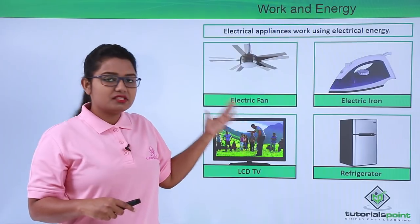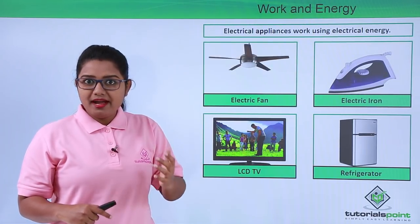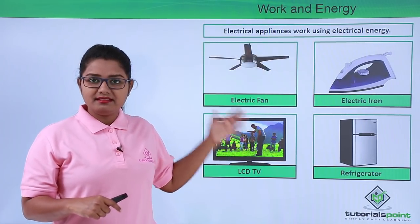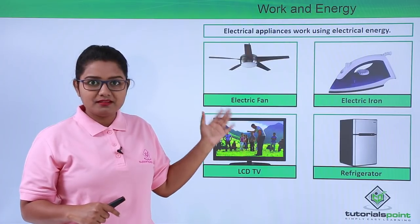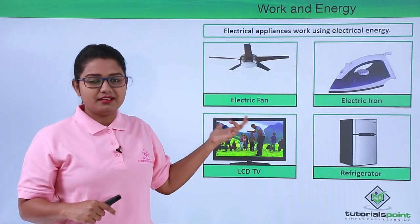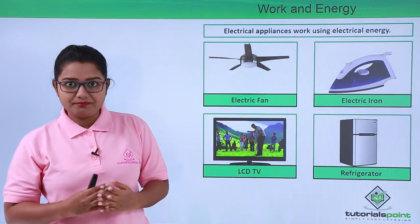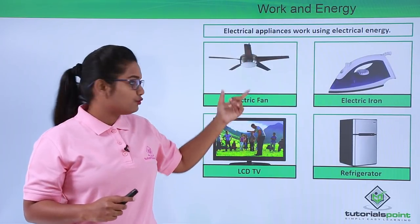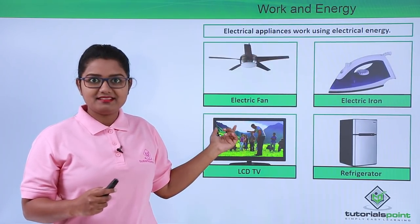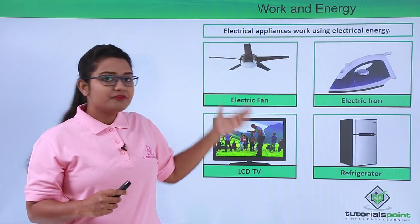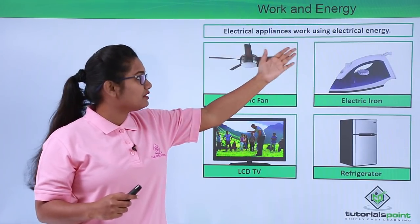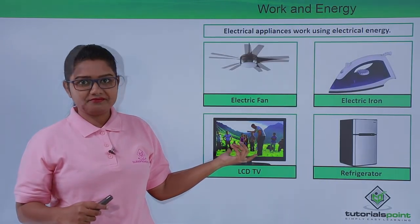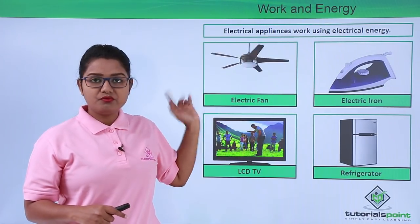Whenever something or someone has to perform work, it requires energy to be spent. As these appliances perform work, there must be energy they are spending. Now where does this energy come from? This energy comes from the electrical supply that we have made to all such appliances. The form of energy they utilize is electrical energy, which comes from the electrical supply connected to them.